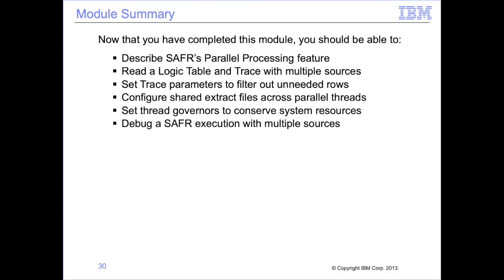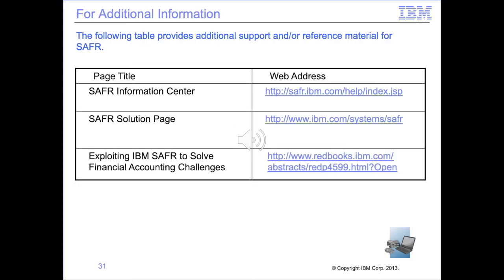This module described SAFR parallel processing. Now that you have completed this module, you should be able to describe SAFR's parallel processing features, read a logic table and trace with multiple sources, set trace parameters to filter out unneeded rows, configure SAFR extract files across parallel threads, set thread governors to conserve system resources, and debug SAFR execution with multiple sources. Additional information about SAFR is available at the web address shown. This concludes Module 19, Parallel Processing.